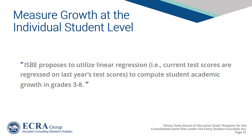According to the approved Illinois Consolidated State Plan under ESSA, ISBE proposes to utilize linear regression — current test scores are regressed on last year's test scores — to compute student academic growth in grades 3-8. While there are many details left out of the document, one can glean some insight into the direction that ISBE is headed given their choice of linear regression.